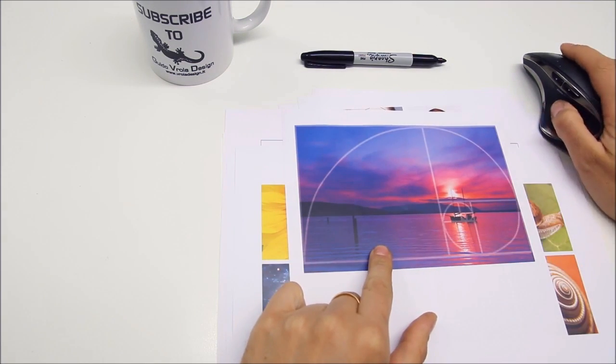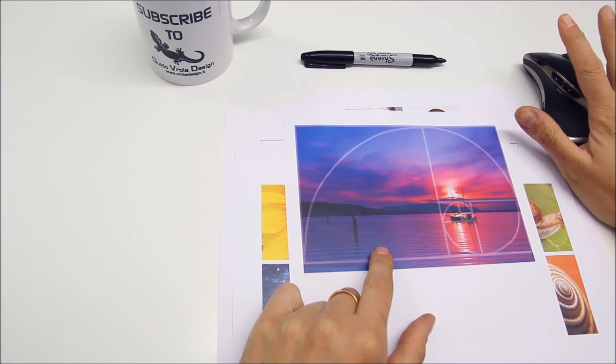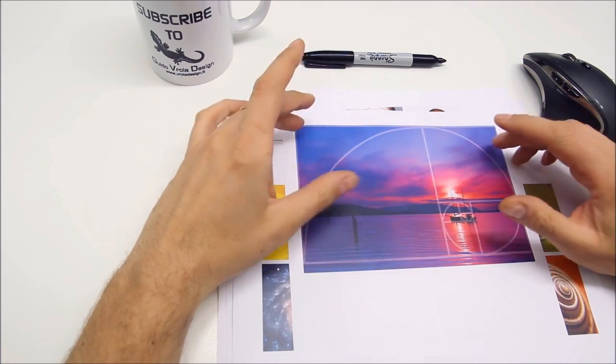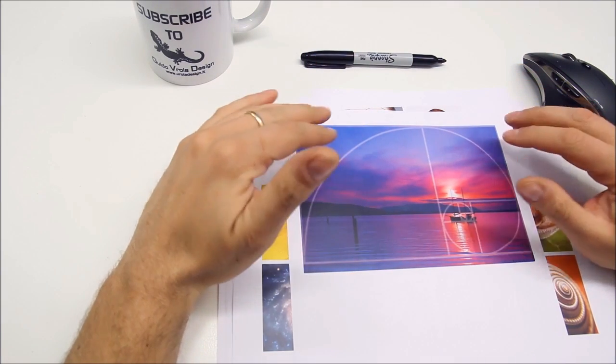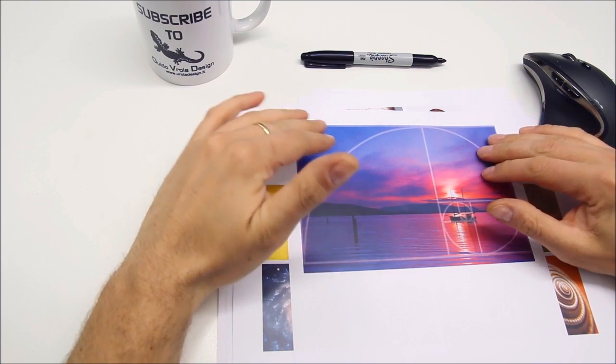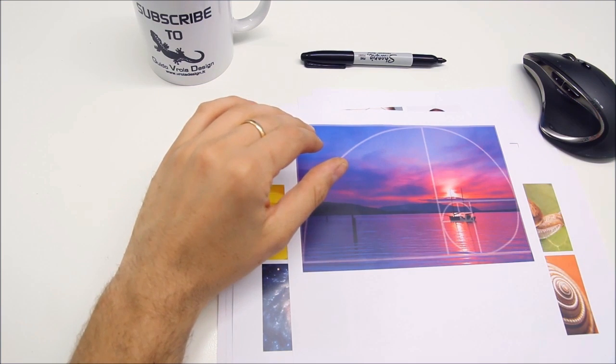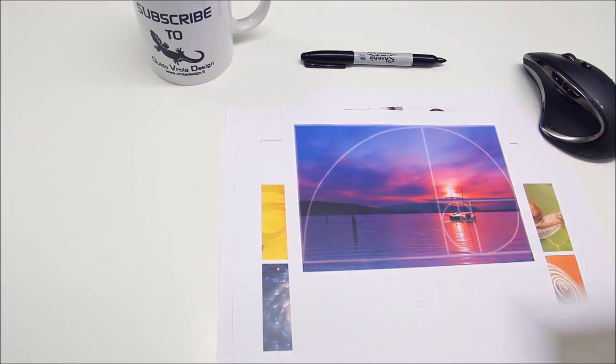The rule of thirds, for example, so commonly used in photography is a simplification and an approximation of this ratio, but you can better figure in your mind this spiral and use it to compose your picture or even your illustrations or 3D renders.